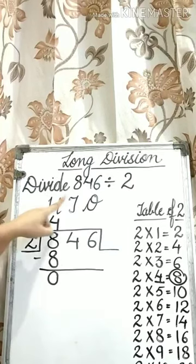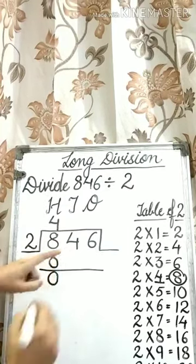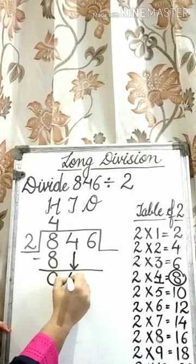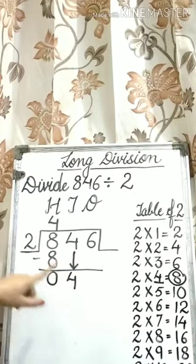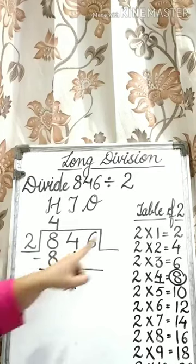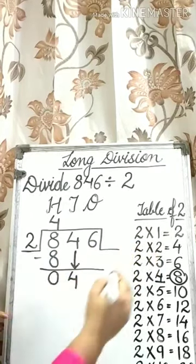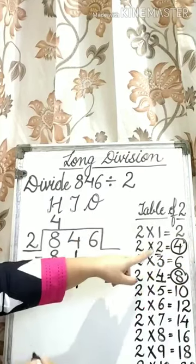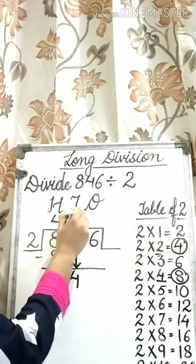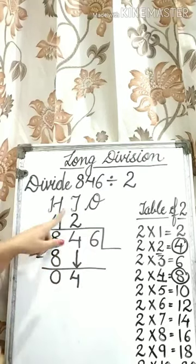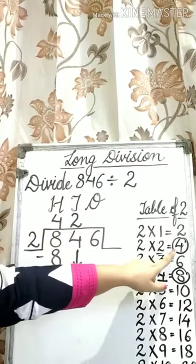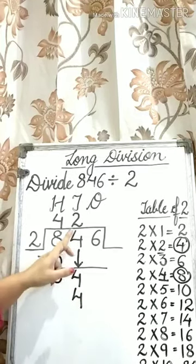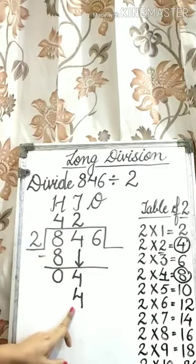Now move on to the next digit. Bring down 4 tens and divide 4 by 2. 2 ones are 2, 2 twos are 4. Write 2 in the tens place of the quotient and write 4 under the dividend in the tens place.